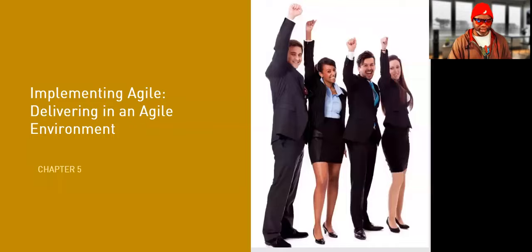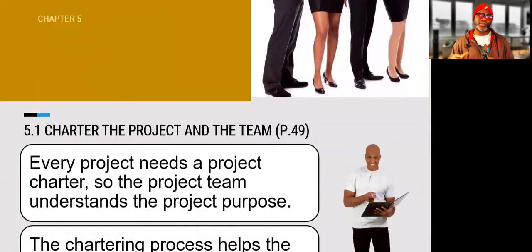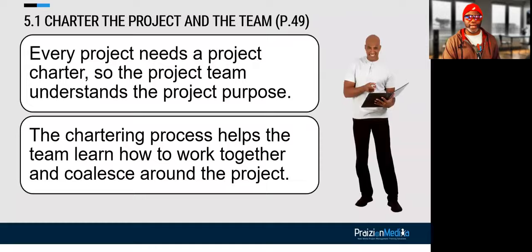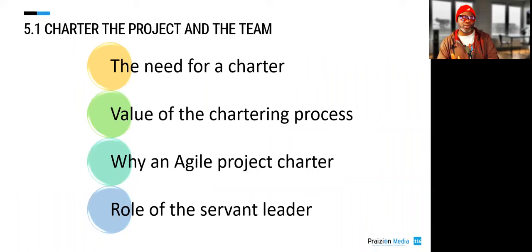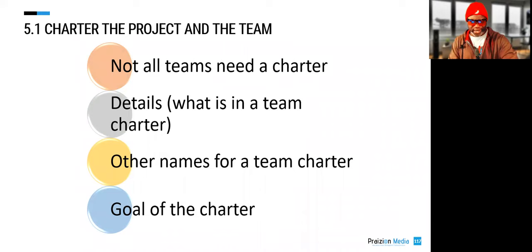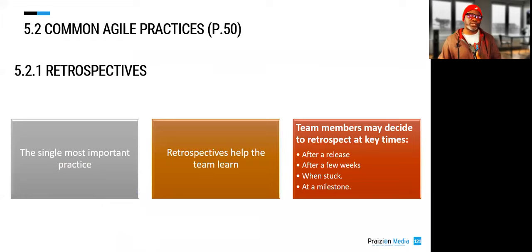The next chapter is about implementing Agile and delivering in an Agile environment. The big thing is the charter — no charter, no project. Every Agile project needs a project charter so that the vision can be crafted and there can be direction. There's also something we call chartering: creating a team charter. Teams that have been working together for a long time may not need a new team charter every project, but where the team has not worked together, a charter could help. We call it a social contract, a team contract, or a team agreement.